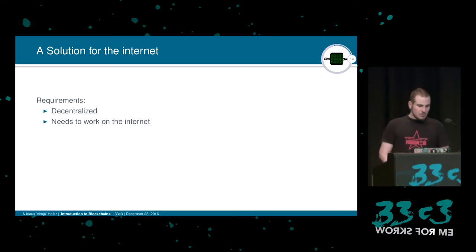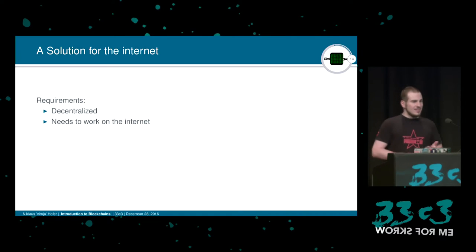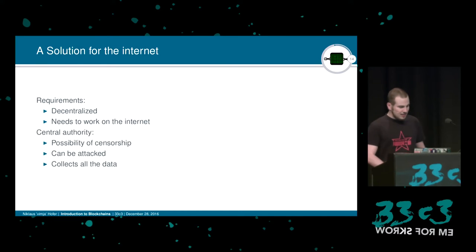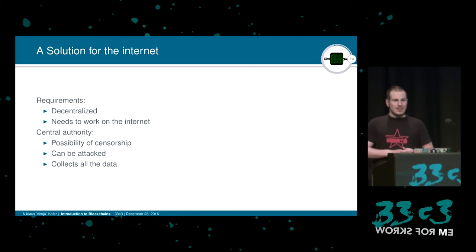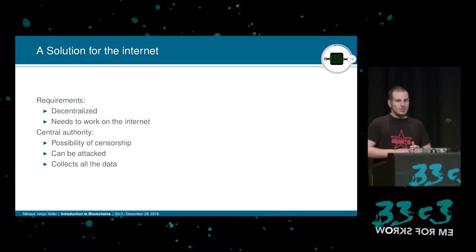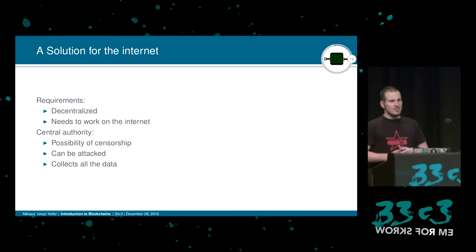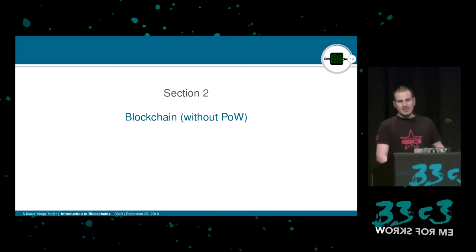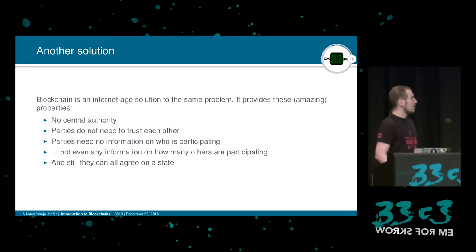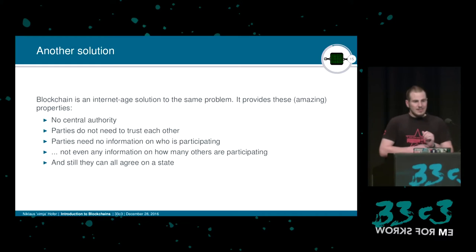If we want to have a system to process payments over the internet and we'd like it to be decentralized — because if we had a central authority, that authority would be able to attack the system, censor it, and collect all data. As we've all seen, PayPal has been known to block accounts. So we are going to need something better, a better solution for the internet age, and that system is of course the blockchain.